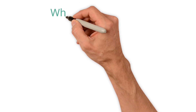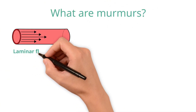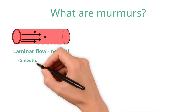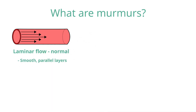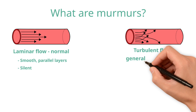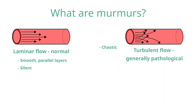Now let's look at how murmurs occur. Blood flow in the heart and vasculature usually exhibits laminar flow, which means it's smooth and moves in parallel layers with the fastest flow in the centre of the cavity. It does not usually produce any sounds. In contrast, blood can instead exhibit turbulent flow, which is chaotic and irregular with blood swirling.